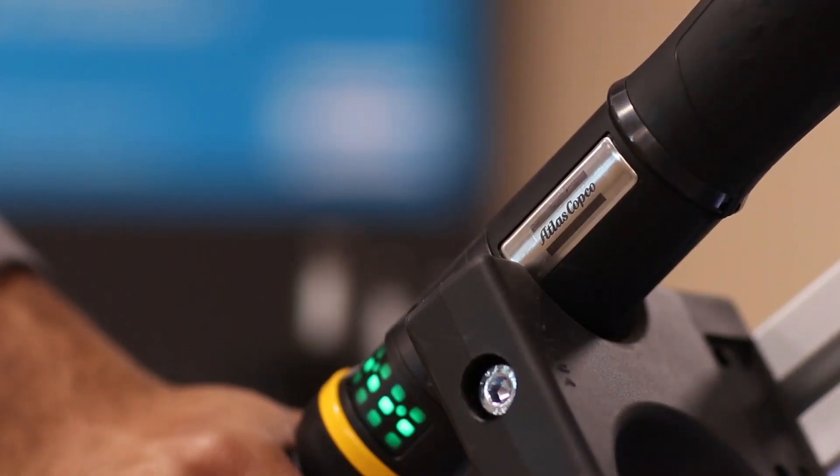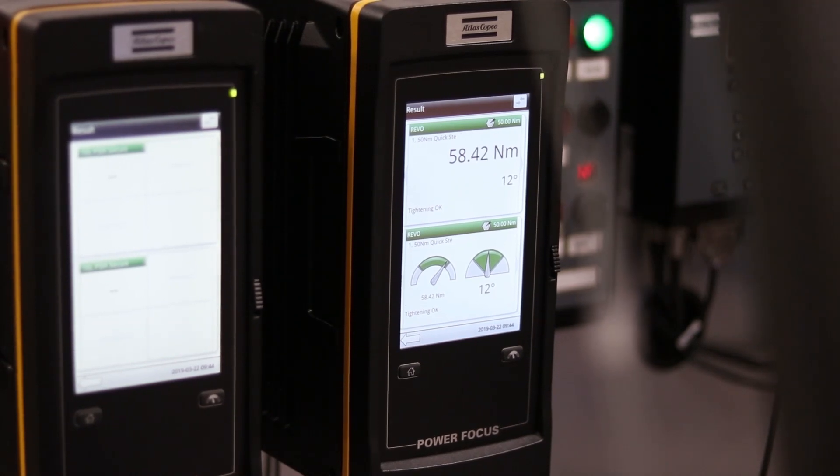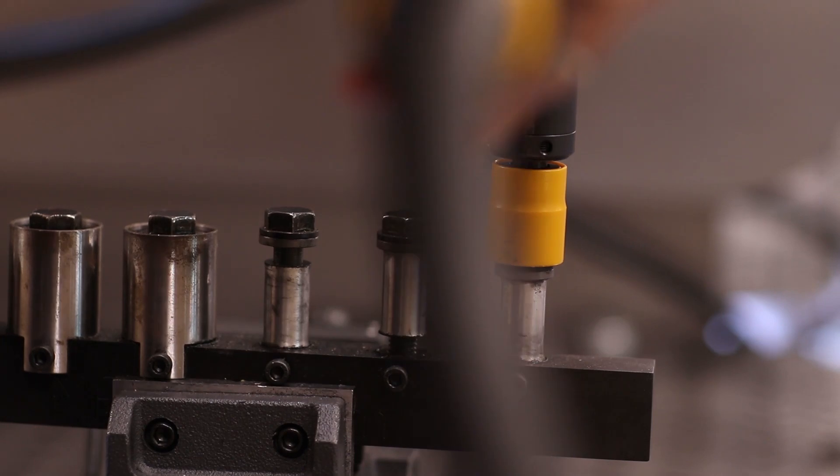The last method is unique to Atlas Copco, and it's a tightening strategy called TurboTite. The system uses a patented algorithm that dynamically adjusts the speed of the tool as we get closer to the final torque. This will transfer the reaction forces into the tool instead of the operator's body.